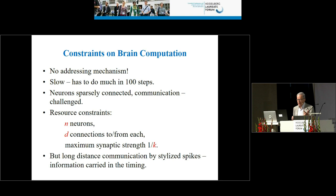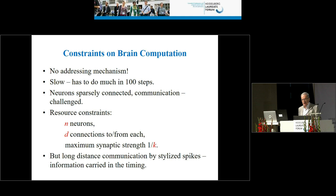The resources are limited, and the three things I care about are: N, the number of neurons; D, the number of connections; and K, how strong each synapse is — K equals 20 means I need 20 neurons to be active at the same time to cause the next neuron to fire. All these things take up volume in your brain, and strong synapses you pay a heavy price for. One big piece of good news is that long-distance communication seems to be very stylized — it spikes, and the timing of the spike seems to be what's important.